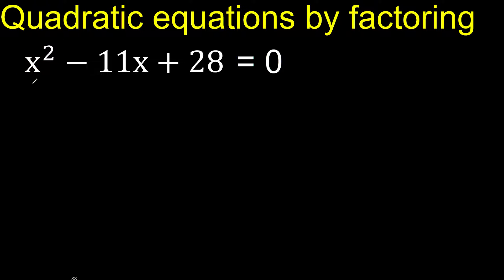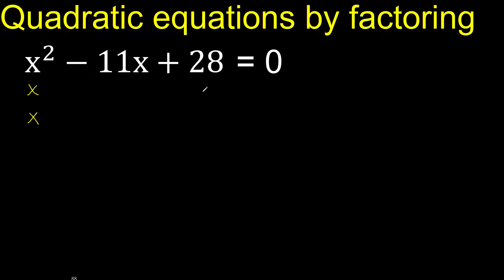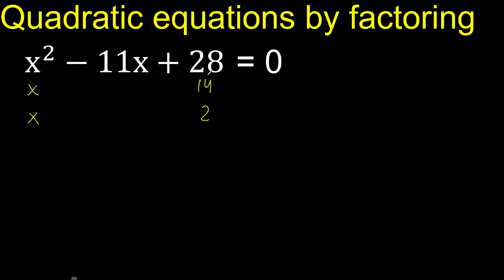x squared — x multiplied by x is x squared. 28: we need 2 numbers that multiply to give 28. 14 multiplied by 2 is 28, but 14 plus 2 or 14 minus 2 doesn't give us the right result.